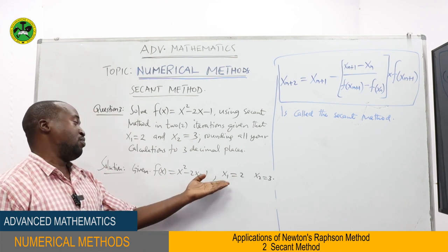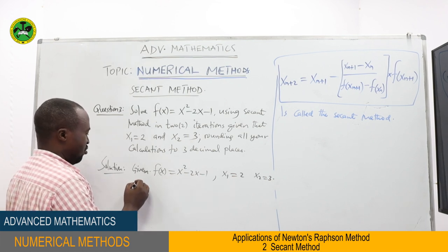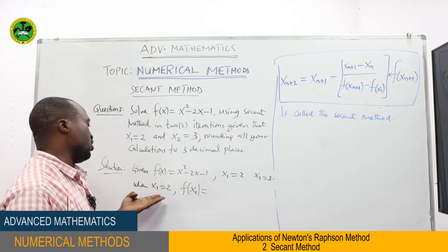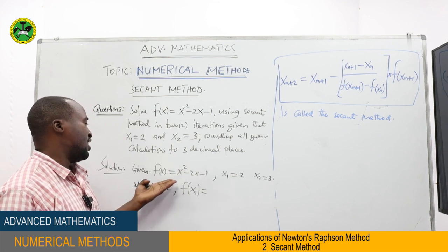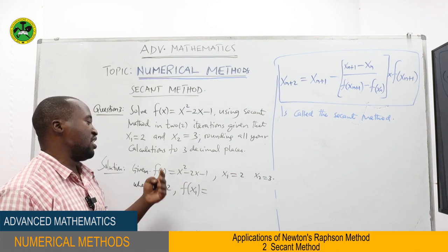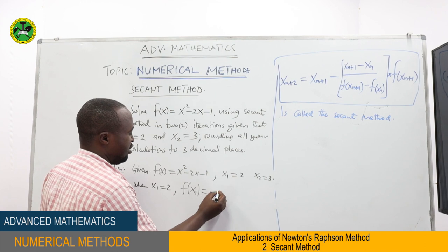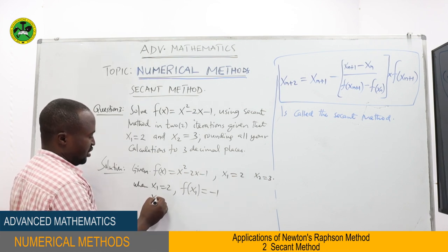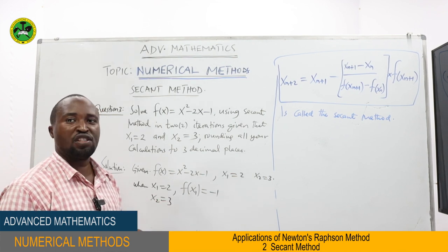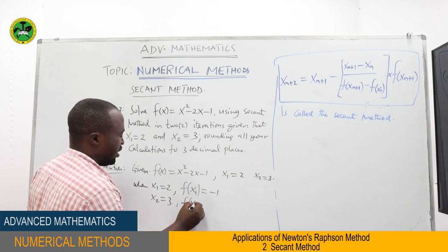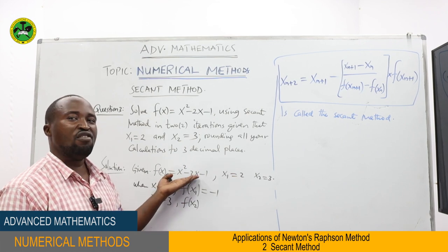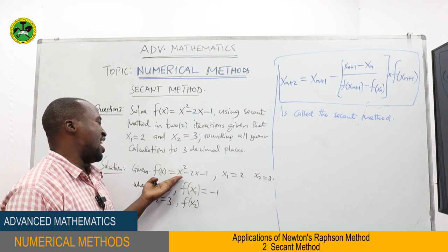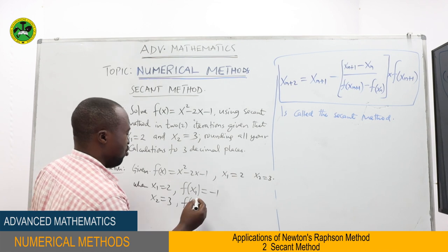From the question, F(X) = X² - 2X - 1, with X1 = 2 and X2 = 3. When X1 = 2: F(X1) = 4 - 4 - 1 = -1. When X2 = 3: F(X2) = 9 - 6 - 1 = 2. So we have F(X1) = -1 and F(X2) = 2.